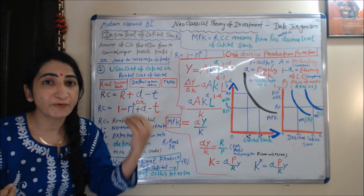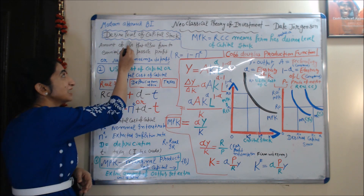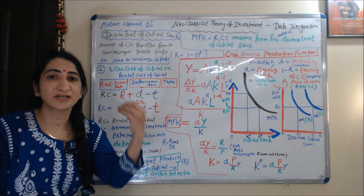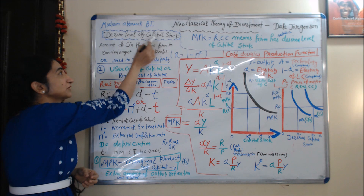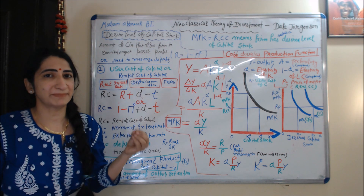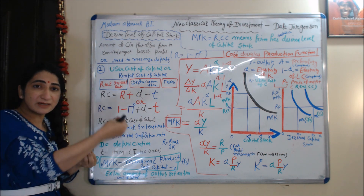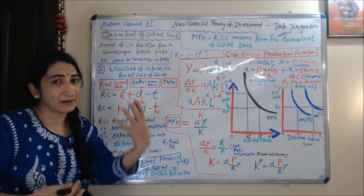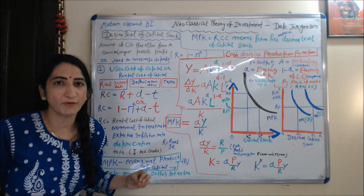According to this theory, a firm or industry needs to establish some desired level of capital stock. The desired level of capital stock is the amount of capital goods that allows the firm to earn its largest possible profit.